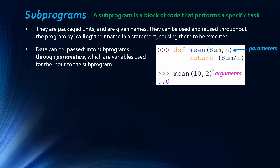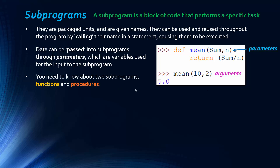Two terms worth knowing: parameters are the variables, and the argument is the actual data being passed to the subroutine. So 10 is the argument for the parameter 'sum', and 2 is the argument for the parameter 'n'. Just as variables represent a bit of data, arguments are that data, and calling the subprogram by referencing its name causes it to be executed.